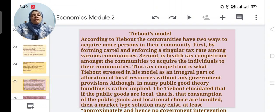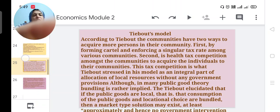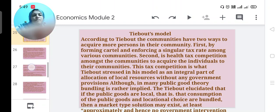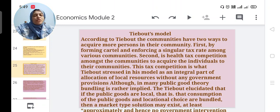Thus this is the quasi-linear explanation of Groves-Ledyard mechanism. Then next theory is Tiebout model. According to Tiebout, the communities have two ways to acquire more persons in their community. First, by forming cartel.